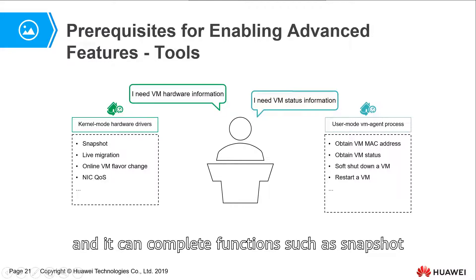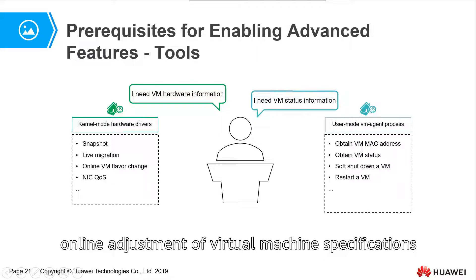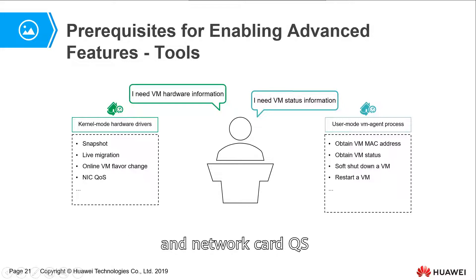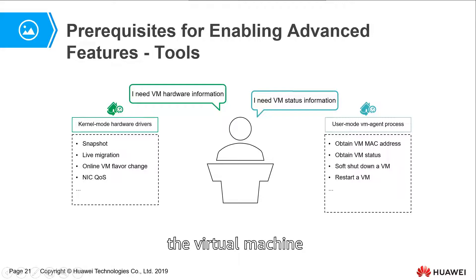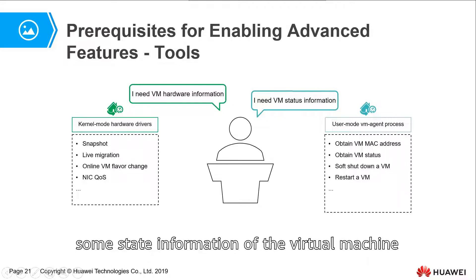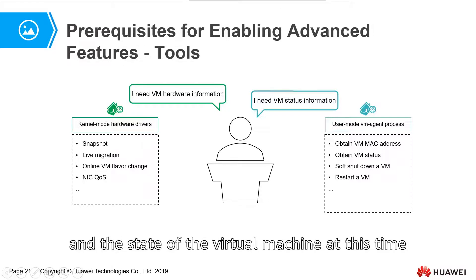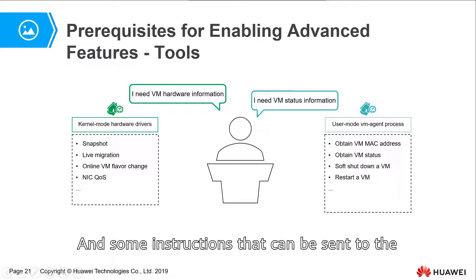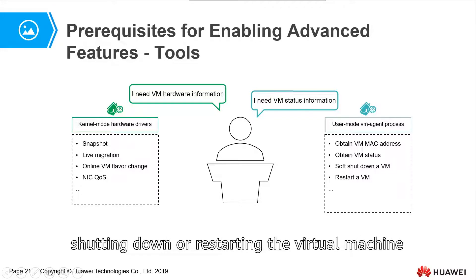With the tools installed, the platform can complete functions such as snapshot, hot migration, online adjustment of virtual machine specifications, and network card QoS. At the same time, the user mode VM agent is a process running inside the virtual machine. Through this agent, the virtualization platform can obtain state information of the virtual machine, such as the VM's IP address and current state. Instructions can also be sent to the virtual machine through the agent, such as shutting down or restarting it.